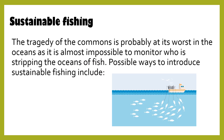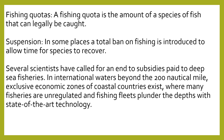Sustainable fishing. The tragedy of the commons is probably at its worst in the oceans, as it is almost impossible to monitor who is stripping the oceans of fish. Possible ways to introduce sustainable fishing include fishing quotas. A fishing quota is the amount of a species of fish that can legally be caught. Suspension: in some places a total ban on fishing is introduced to allow time for species to recover.